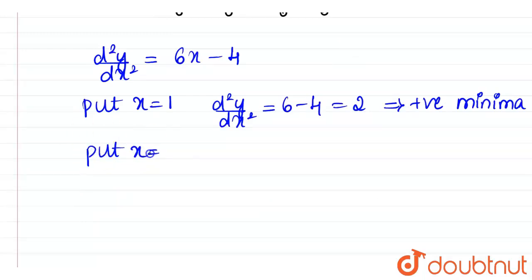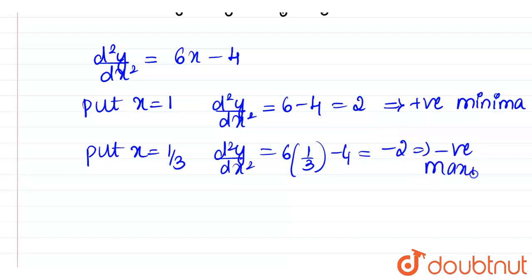Similarly, put x is equal to 1 by 3. So d square y by dx square will now be equal to 6 into 1 by 3 minus 4. 6 into 1 by 3 is 2. 2 minus 4 is minus 2 which is negative which represents maxima. So maximum value of the maxima will be occurring at minus 2.